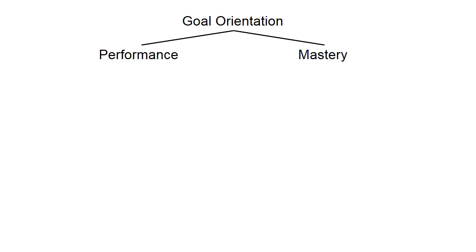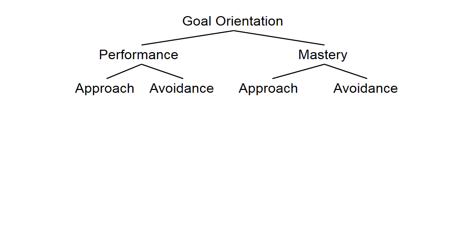Researchers have also identified other distinctions within these two broader goal orientations. Both performance and mastery goal orientations can be subdivided into approach and avoidance orientations, as shown here. This allows us to identify four different types of goal orientations: performance approach, performance avoidance, mastery approach, and mastery avoidance. Let me define these for you.